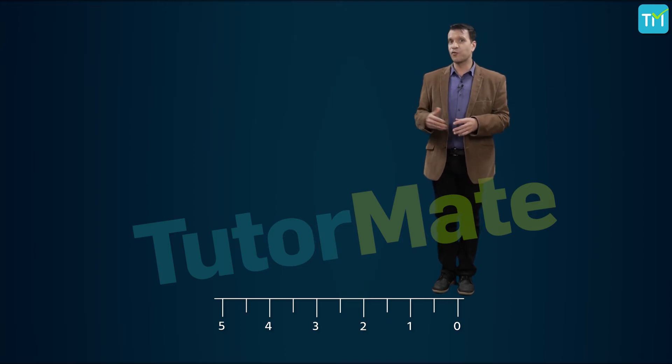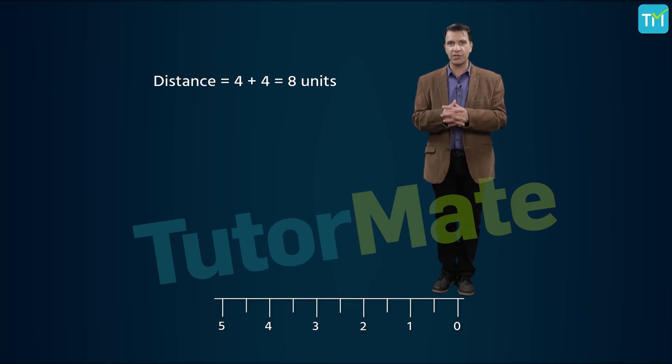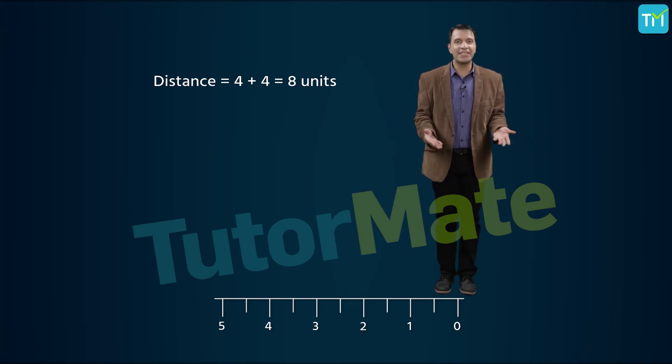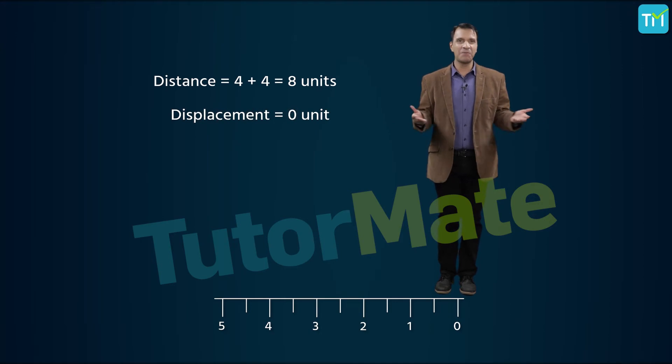First, it was four units in this direction and then four more units back to get back to where I am. Adding four and four, we get eight units as the distance. And what about displacement? Since I'm back to the origin, to the point where I started from, my displacement is zero.